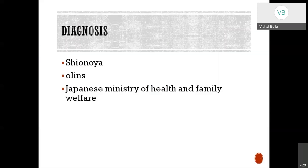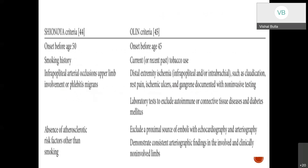The diagnostic criteria are mainly from three sources: the Shionoya criteria, the Olin criteria, and the Japanese Ministry of Health and Family Welfare. The Shionoya criteria, devised in 1998, includes: onset before age 45, smoking history, infrapopliteal artery occlusions, upper limb involvement or phlebitis migrans, and absence of atherosclerotic risk factors other than smoking. The Olin criteria, devised in 2000, includes: onset before age 45, current or recent tobacco use, distal extremity ischemia with rest pain, ischemic ulcers, or gangrene documented with non-invasive testing, laboratory tests to exclude autoimmune or connective tissue disorders and diabetes mellitus, exclusion of a proximal source of emboli with echocardiography and arteriography, and consistent arteriographic findings in both involved and clinically non-involved limbs.